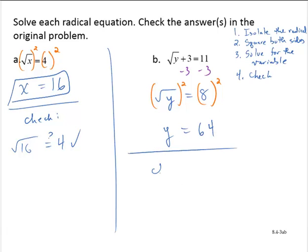Let's run the check. Is the square root of 64 plus 3 equal to 11? That gives us 8 plus 3, which is 11. That checks out. I'm confident in my solution.